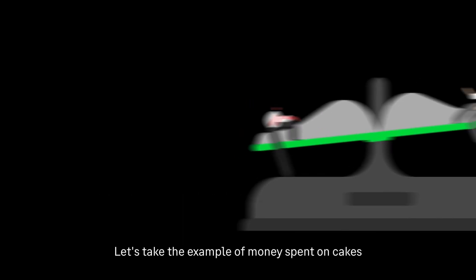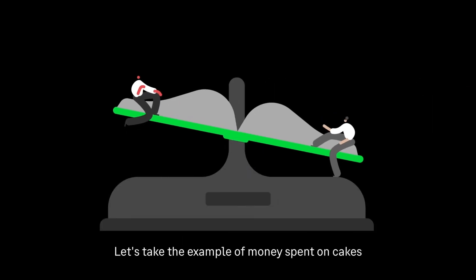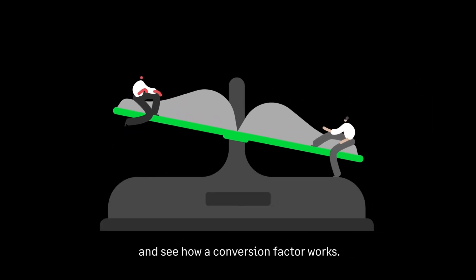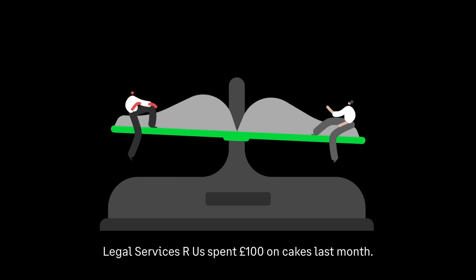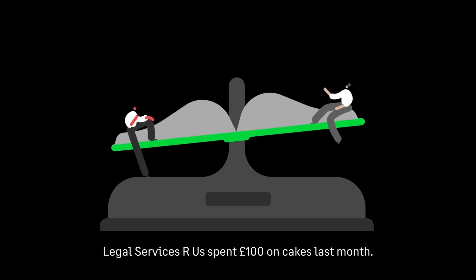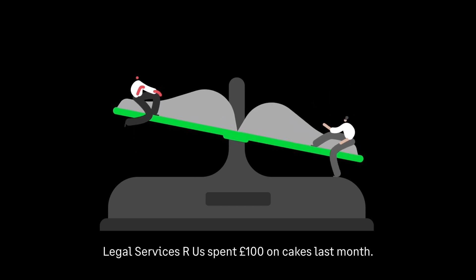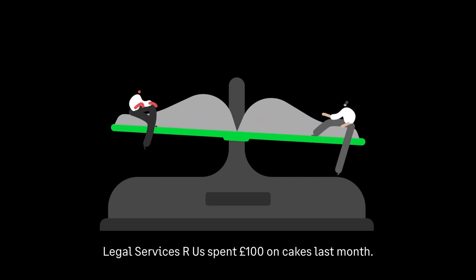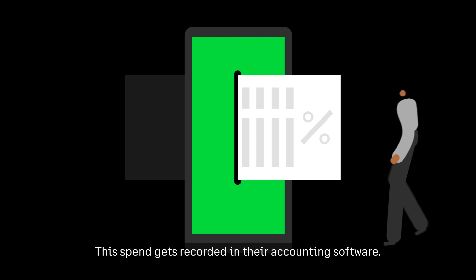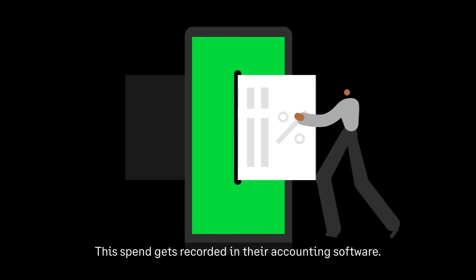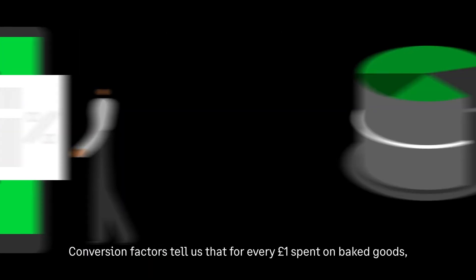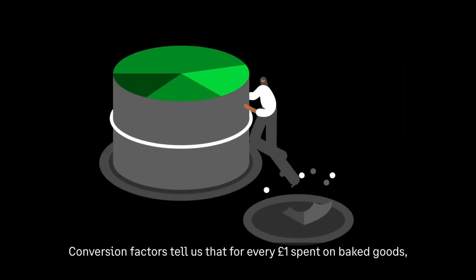Let's take the example of money spent on cakes and see how a conversion factor works. Legal Services R Us spent 100 pounds on cakes last month. This spend gets recorded in their accounting software. Conversion factors tell us that for every one pound spent on baked goods, the emissions associated are 0.5 kilograms of carbon dioxide equivalent.